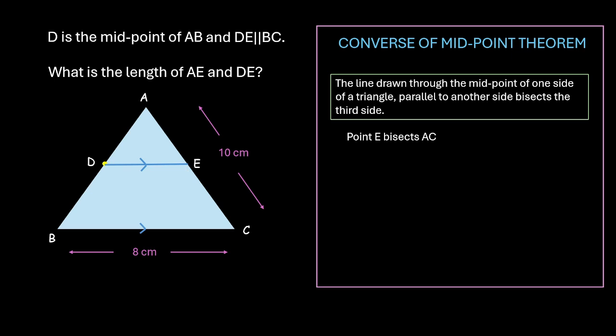If E bisects AC, that means AE is equal to EC. Or, AE is half of AC. Now, AC is given 10 centimeters. So, AE is half of 10 centimeters, that is 5 centimeters.